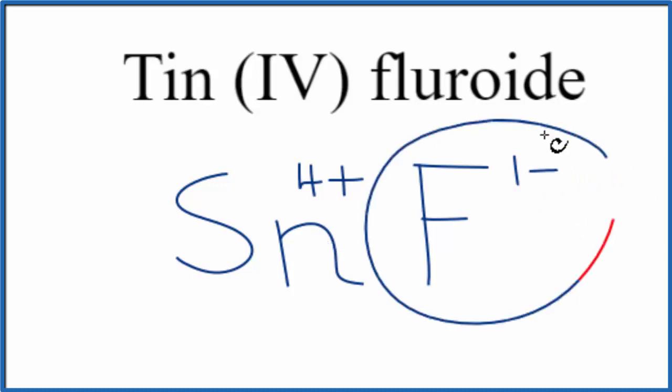So we're going to need four of these fluorine atoms to balance out the four plus on the tin. So we'll just put a four here. Four times one minus, that's four minus. That'll balance out the four plus.